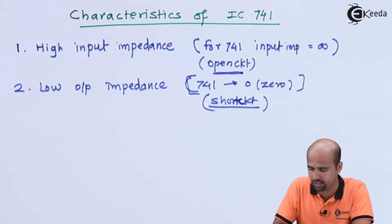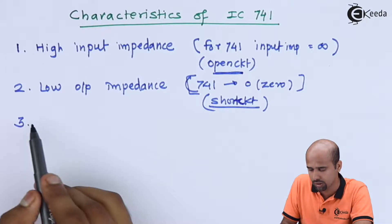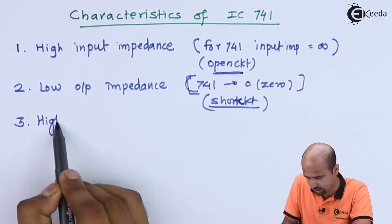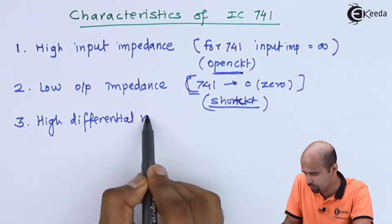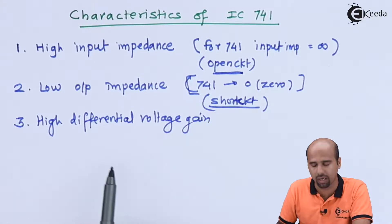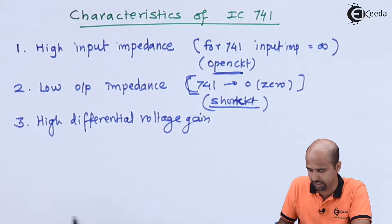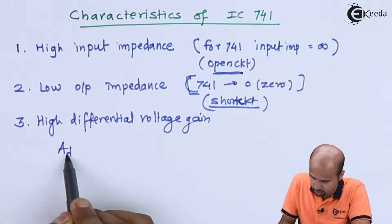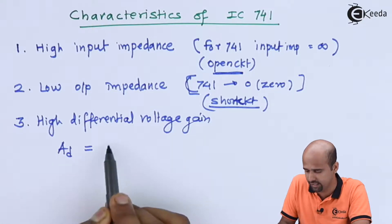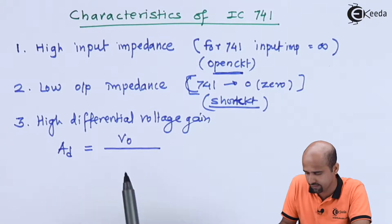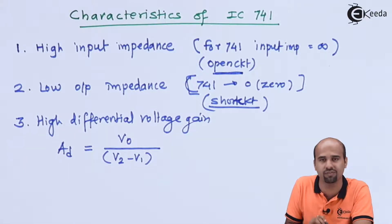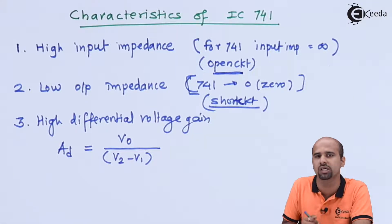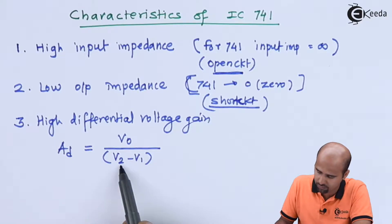In short, we have learned two characteristics: high input impedance and low output impedance, both important from an amplification point of view. The third one is high voltage gain — specifically, a very high differential voltage gain. The differential voltage gain gives you the factor AD, which is nothing but Vout divided by (V2 minus V1). You can write V1 minus V2 if V1 is the non-inverting terminal and V2 is the inverting terminal.